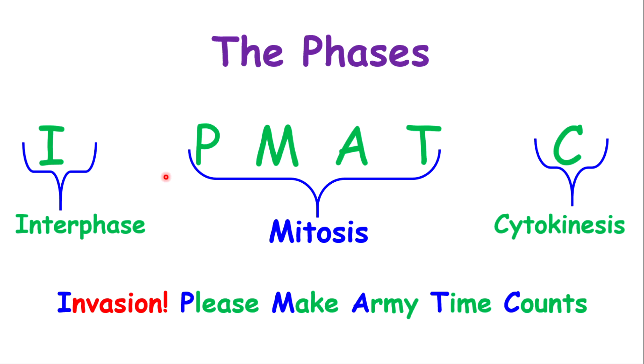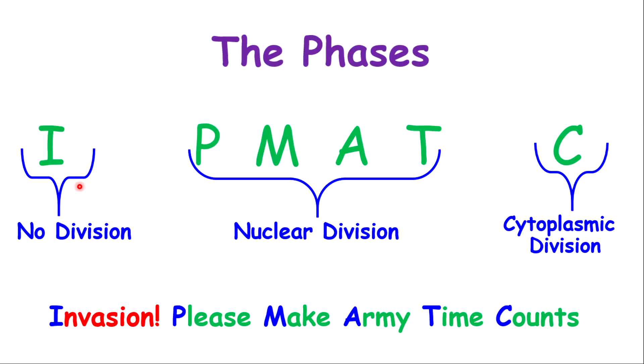There's a pre-mitosis stage known as the interphase. Post-mitosis, which means after mitosis, you have what they call cytokinesis. Easy way to remember all these phases and stages: Invasion, please make army time counts. It's I-P-MAT-C. In the interphase, which is pre-mitosis, there's no division of a cell taking place. Then you have a nuclear division that is by mitosis. After mitosis, there is a cytoplasmic division known as the cytokinesis.